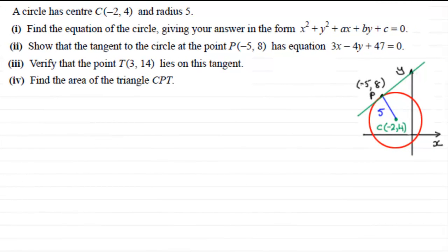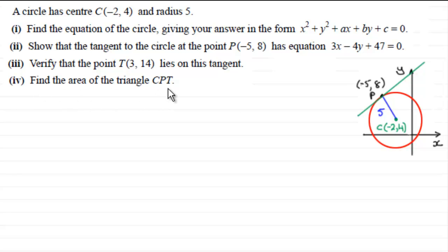For the last part of this question, we've got to verify that the point T, which has coordinates (3, 14), lies on this tangent that we just found, which had this equation. And we've then got to go on to find the area of the triangle CPT. If you'd like to try this part, just pause the video and come back when ready and we'll run through the solution.